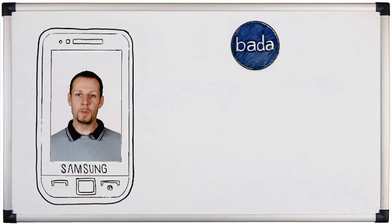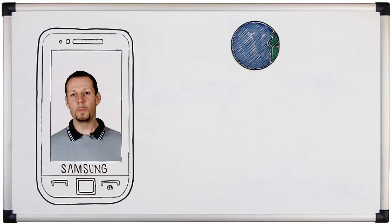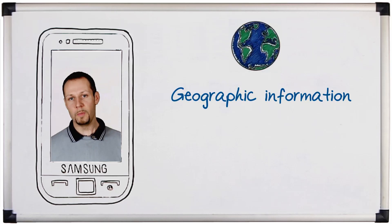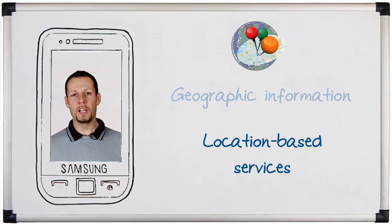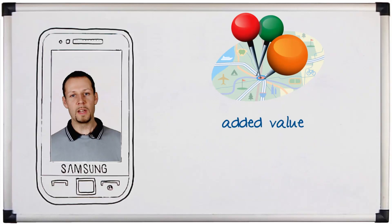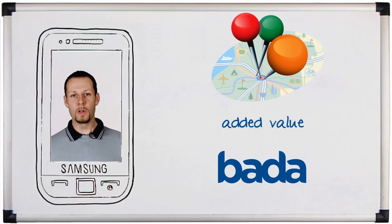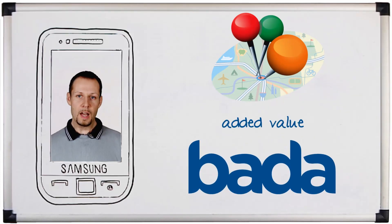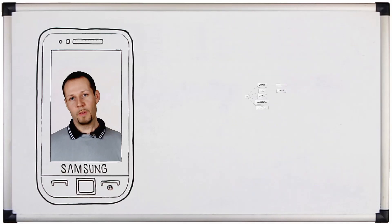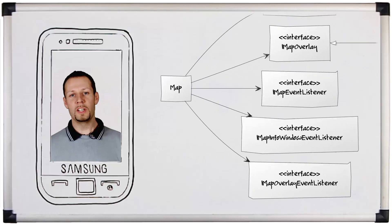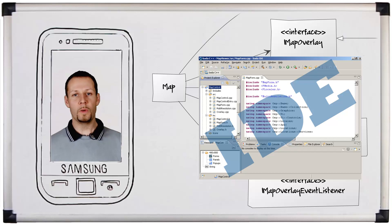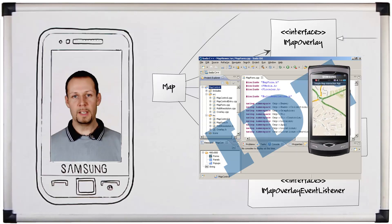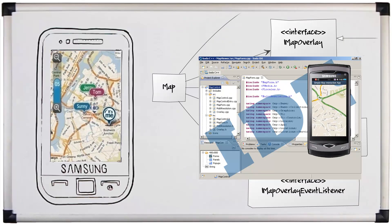In today's video we will take a look at the functionality built into Bada for exploiting geographic information and location-based services. We will start with a short introduction to location-based services, the added value gained through them, and how they can be realized through Bada. After that we will present an application example. We will give you an overview of the engine classes offered by our libraries, and using the Bada IDE we will show you the source code required to load maps, get locations and display them on the screen.